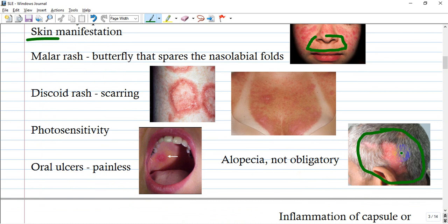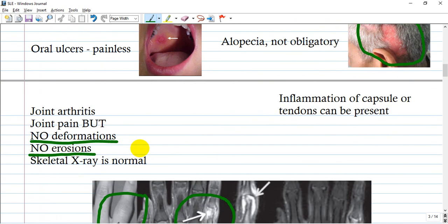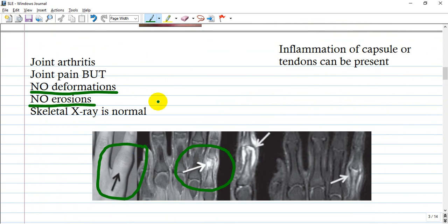Joint arthritis: patients have involvement of the osteoarticular system, but look here - no deformities, no erosions, and skeletal x-ray is usually normal. What this means is the affected structures are tendons, capsule, or other tissues, but not the skeleton itself.